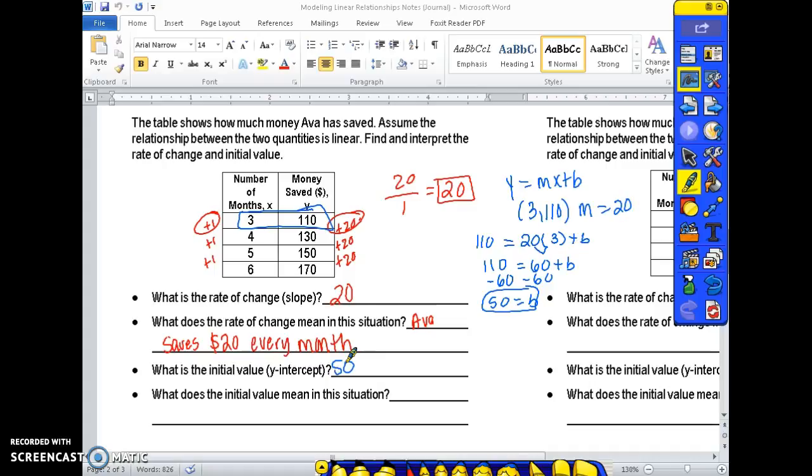Now what does that mean for this situation? The initial value is where she starts. So she started off saving $50. She started out with $50.